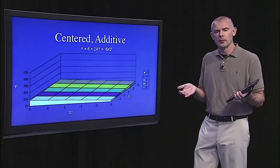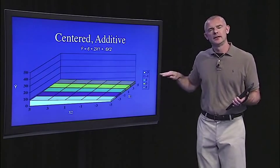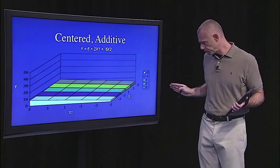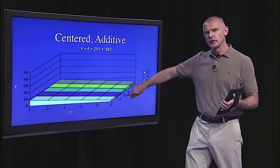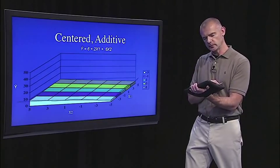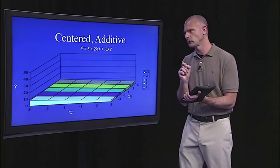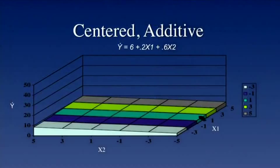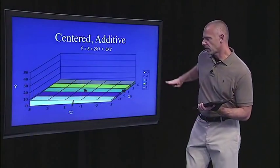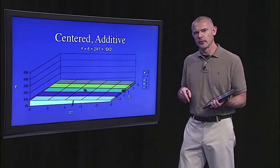What happens when we center the variables x1 and x2? Nothing to the shape of the graph — except if you look carefully, just the scales have shifted. Now down in the lower right it's not 0, 0, it's negative 5. Looking at the regression equation, the slopes are exactly the same — 0.2 and 0.6 — slopes are slopes. All I've done is change the scales. But that changes the regression constant. Now zero on x1 and zero on x2 is somewhere in the middle of the graph, and the predicted score there is 6. All we've done is change the regression constant.